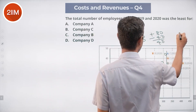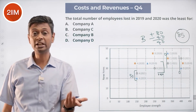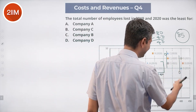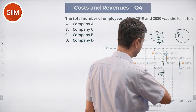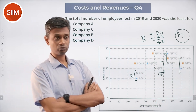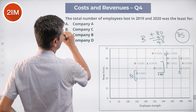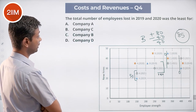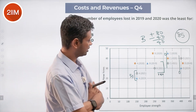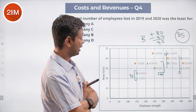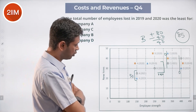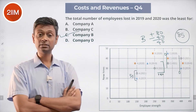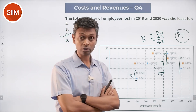For C: net change is 0, but 40 and 45 were added across 2019 and 2020 — 85 people recruited, yet total headcount doesn't change, so 85 people have left. For D: added 30 in 2019 and 35 in 2020 — 65 added and 65 have left. So employees lost: A = 55, B = 40, C = 85, D = 65. The least is B with only 40 people lost.